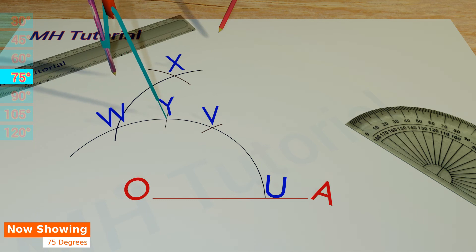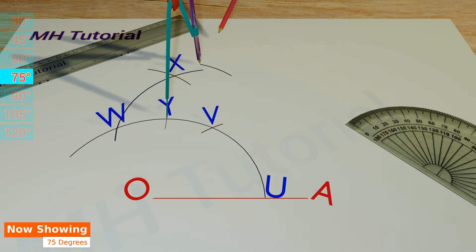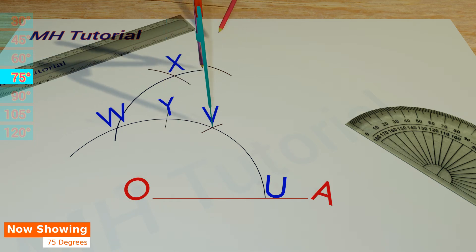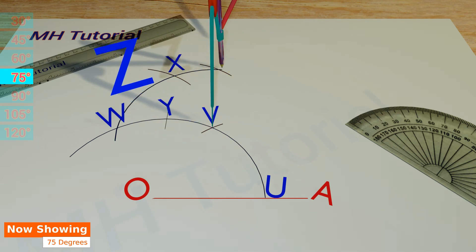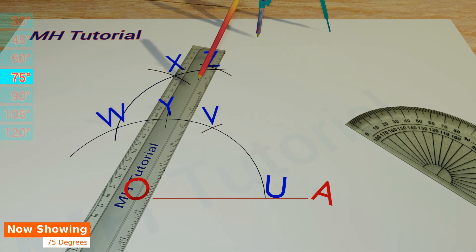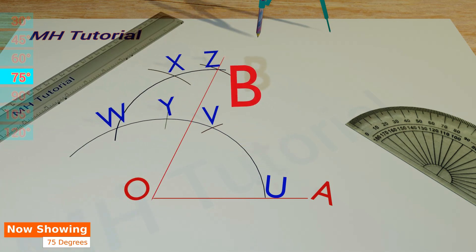We will draw two circle arcs of the same size from point B and point Y. These two arcs meet each other at point Z. Finally, with the help of a scale and a pencil, point Z and O are joined. So we got the required angle — its name is angle AOB, which is 75 degrees.